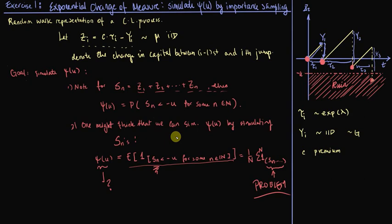And more specifically, we are actually going to consider each of these jumps Z, and we are going to shift them using an exponential change of measure, and then consider how to estimate the ruin probability using these shifted Z's.